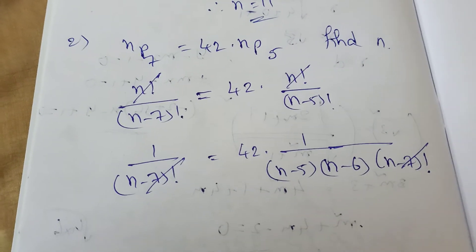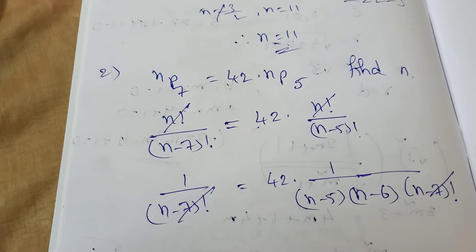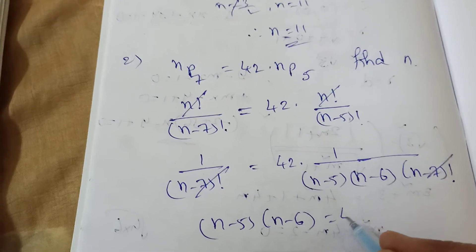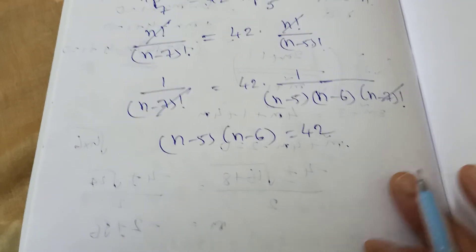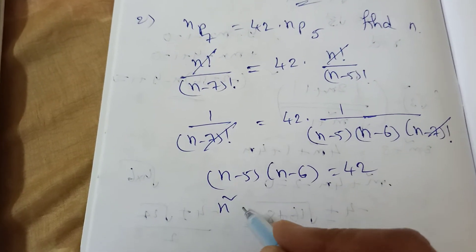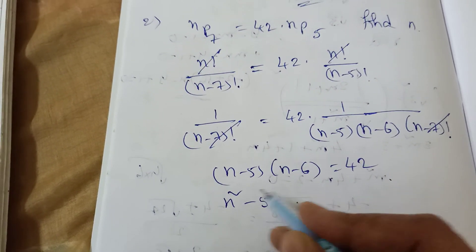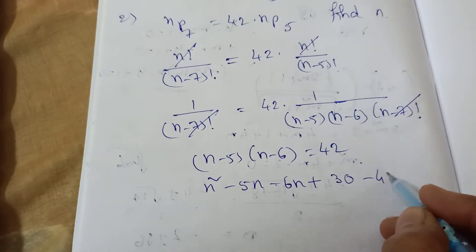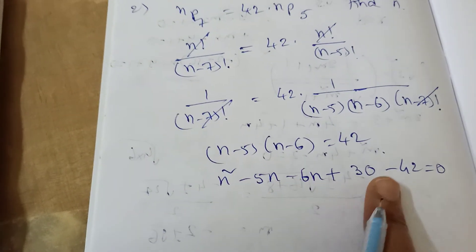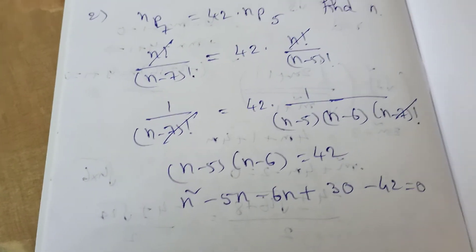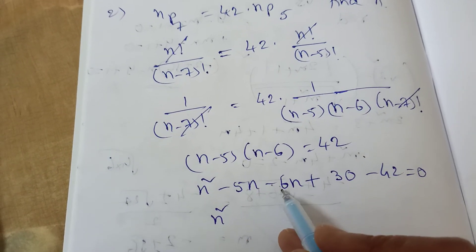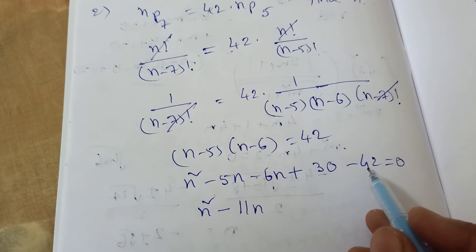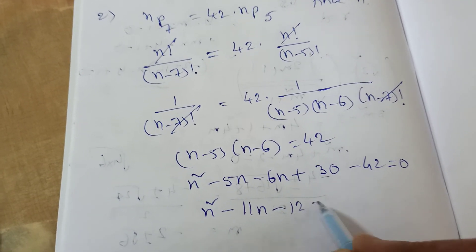After cancellation we get (n minus 5)(n minus 6) equals 42. Expanding: n squared minus 11n plus 30 minus 42 equals 0, giving n squared minus 11n minus 12 equals 0.